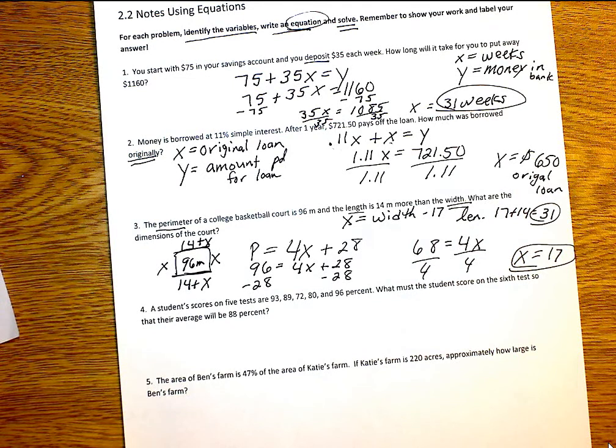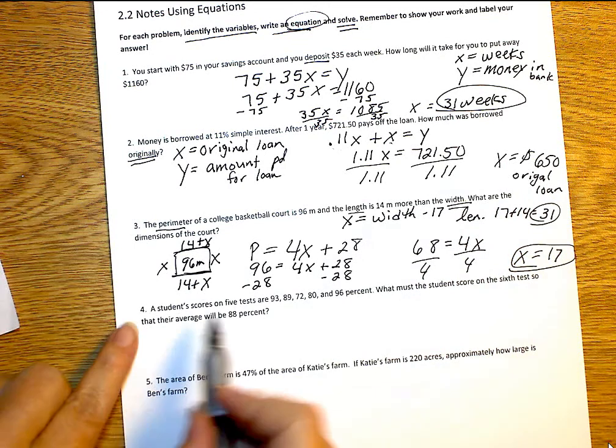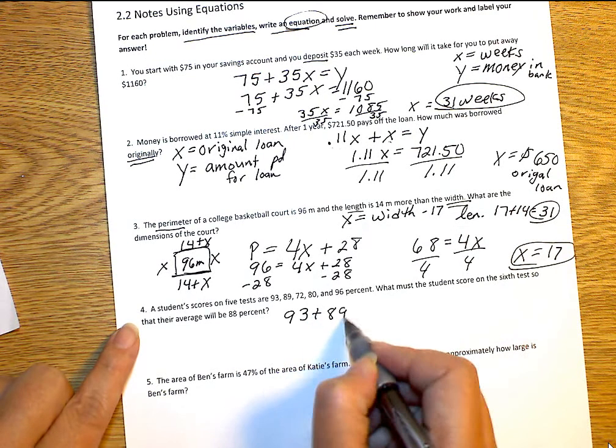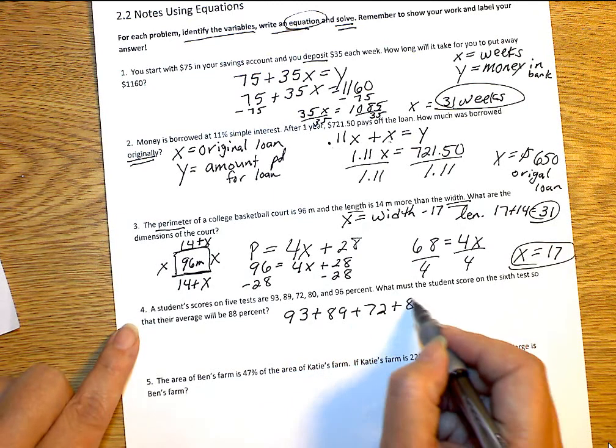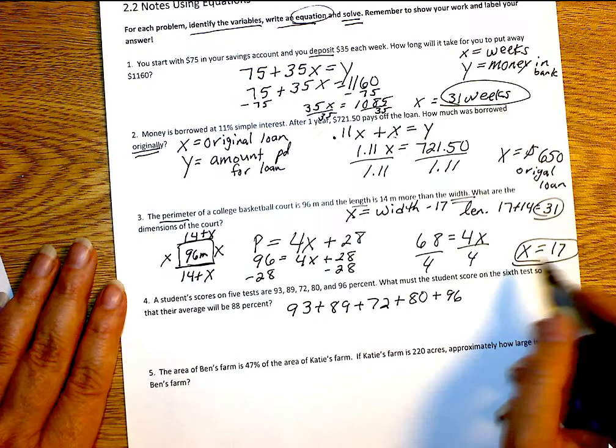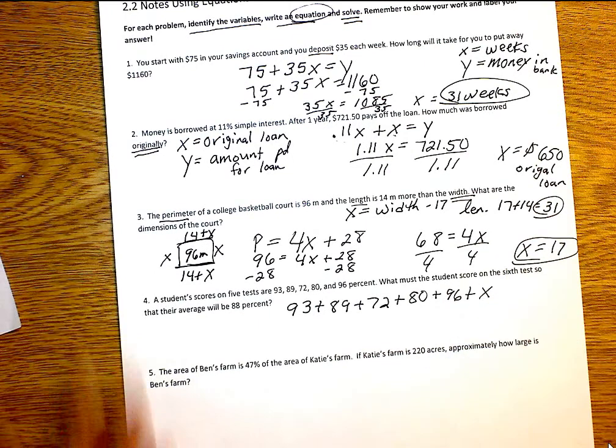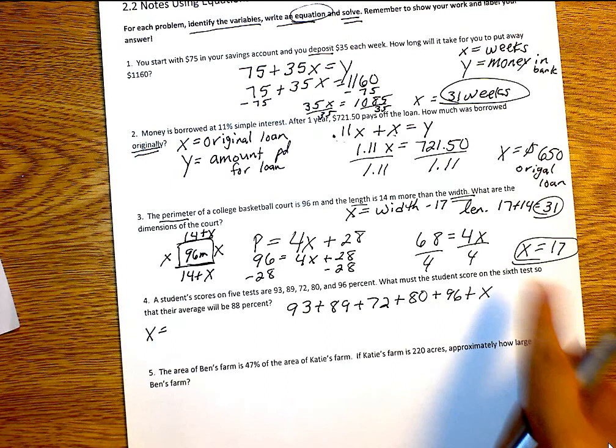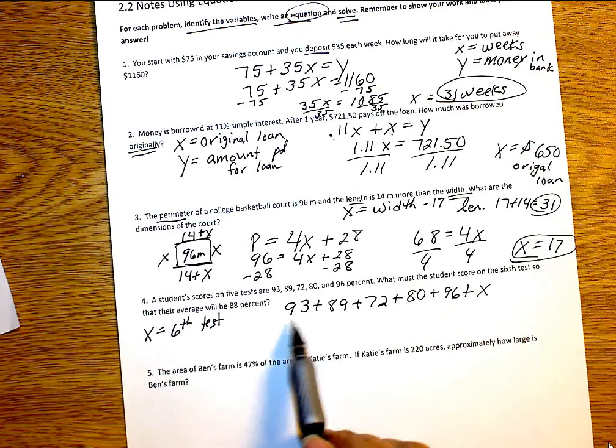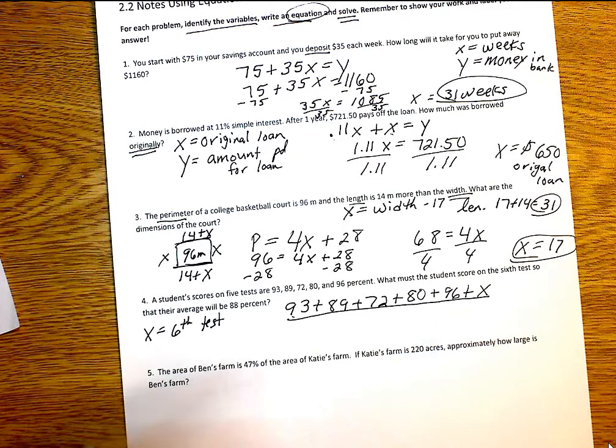All right. How do you find the average of tests or of anything? How do you find the average of things? Yes. Add them up and then divide by how many they are. So, a student receives 93 on a test. And then she receives an 89. And then a 72, 80, and then a 96. They want to know what they have to score on the next test. So, X. So, anytime you write X down, we want to always say X equals what it equals. So, what does X equal? The sixth test. Very good.